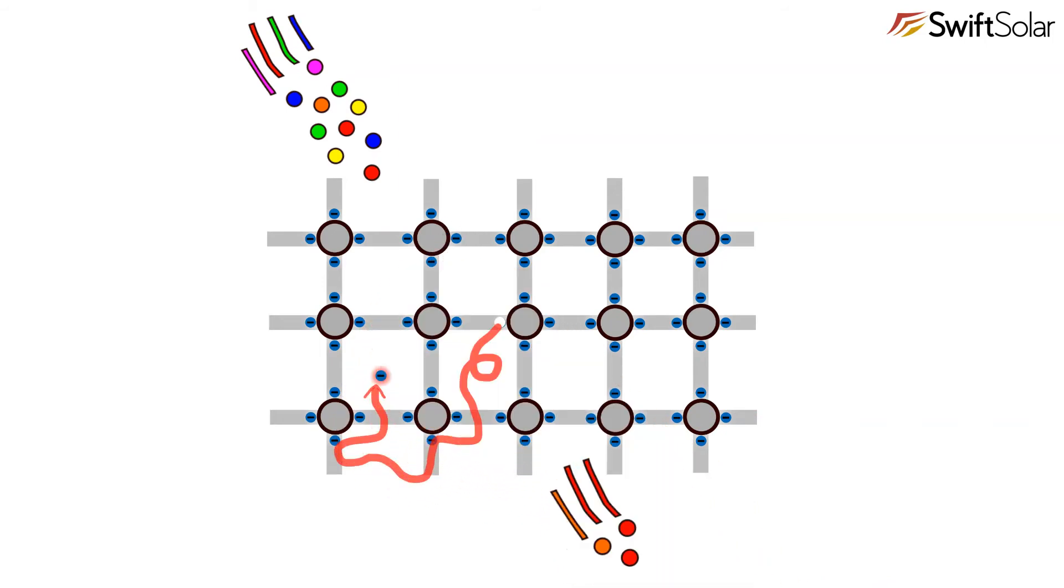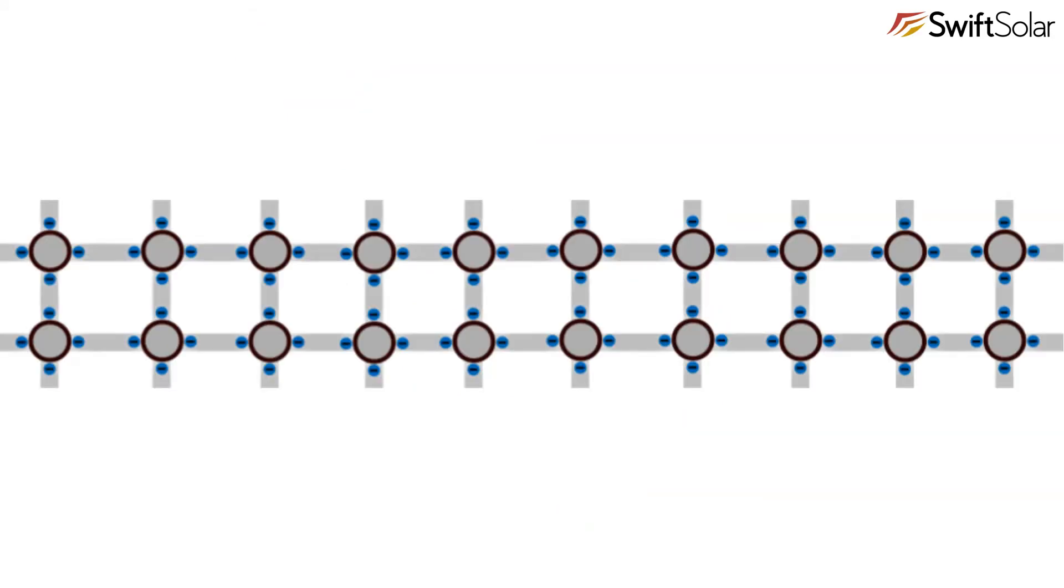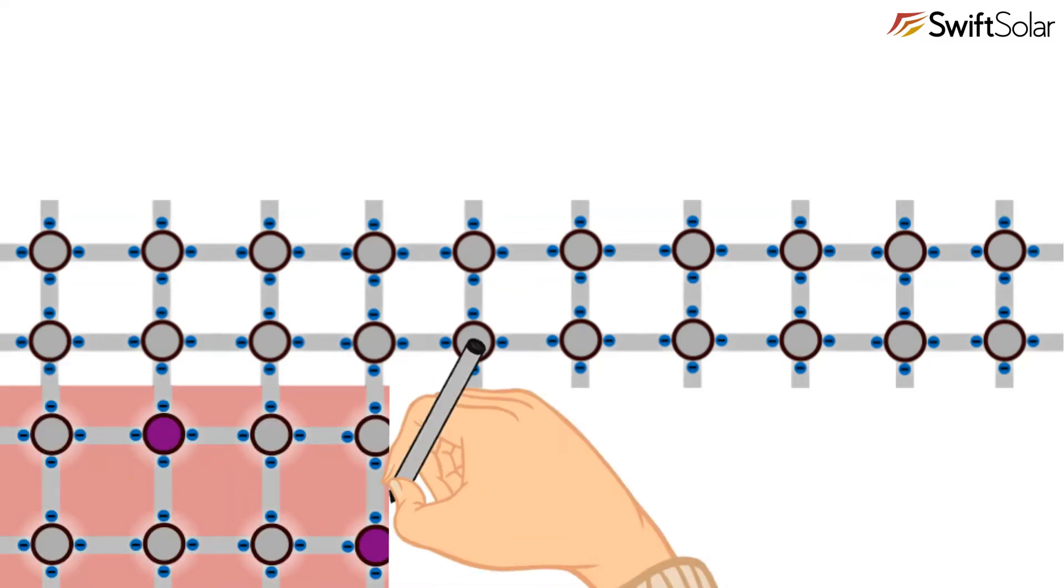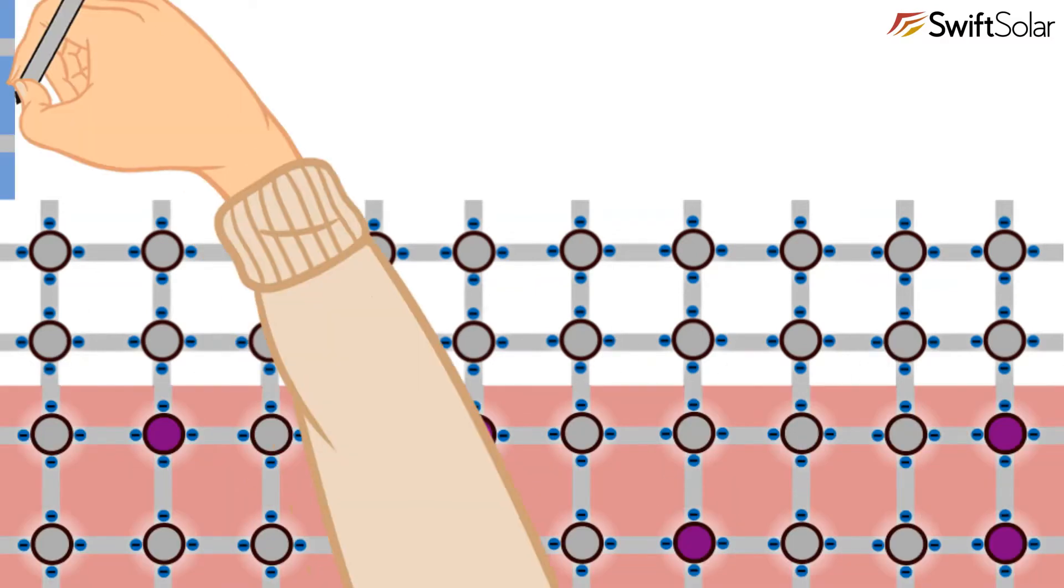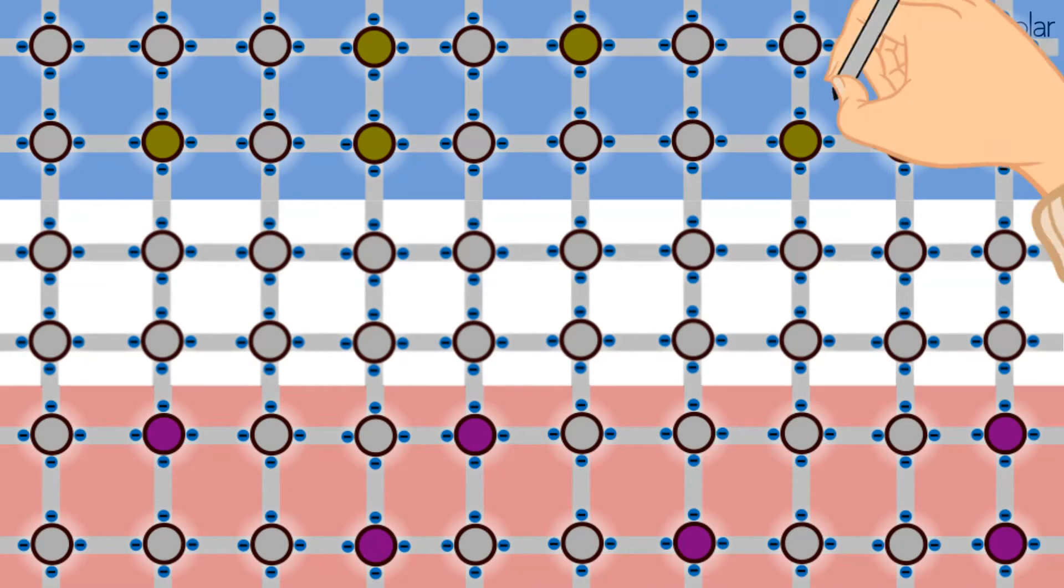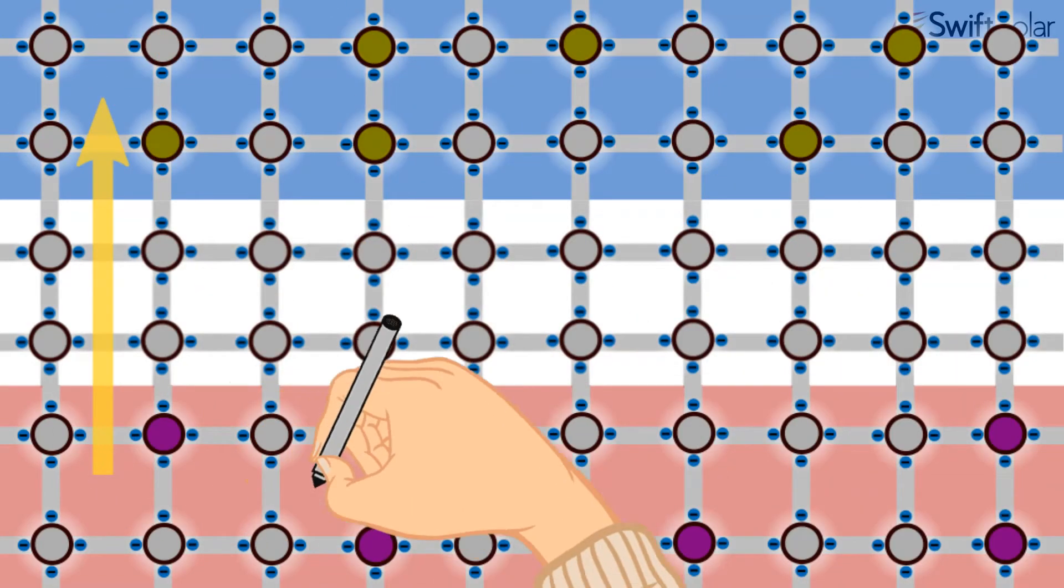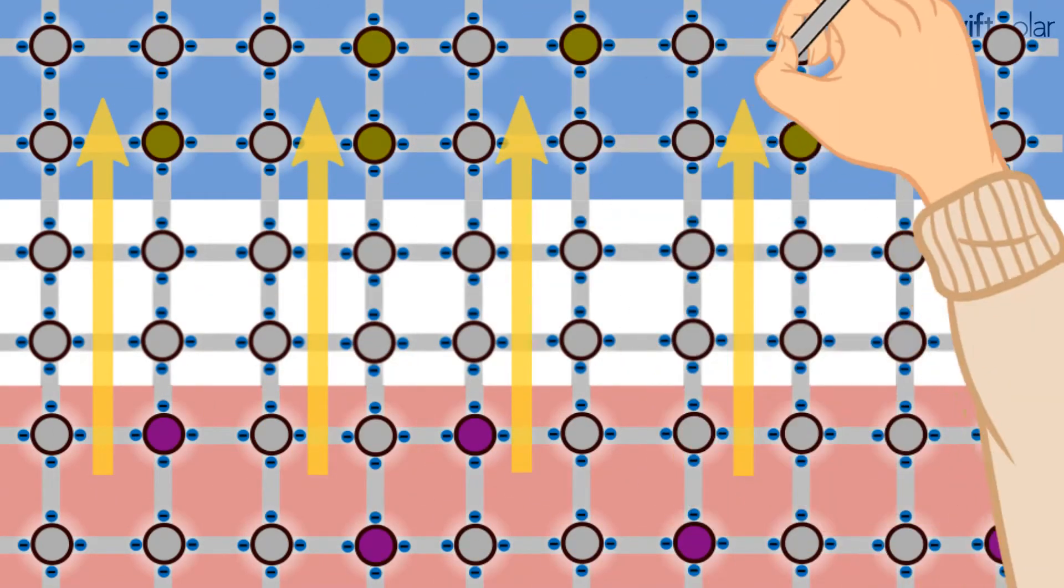To generate an electric current from our solar cell, we need a way to push the freed electrons out of it. Otherwise, they will fall back into their original position and lose energy. By making microscopically thin layers of the right combination of materials, we can create an electric field across the solar cell.